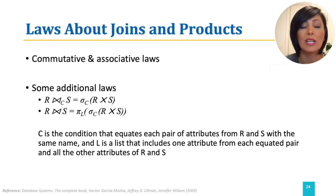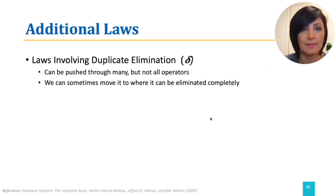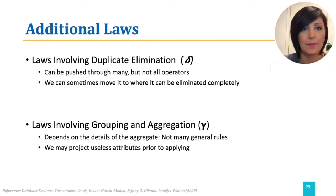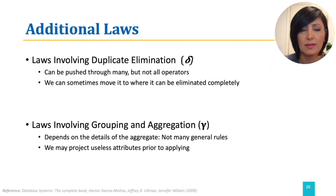In practice, we usually apply these rules from right to left. We also have laws for duplicate elimination as used in distinct, and laws for grouping and aggregations. Duplicate eliminators can be pushed through many but not all operators. We can sometimes move duplicate eliminators to where they can be eliminated completely. The laws involved in grouping and aggregation depend on the details of the aggregate, and we do not have many general rules for grouping and aggregation. However, we may project useless attributes prior to applying grouping and aggregation.